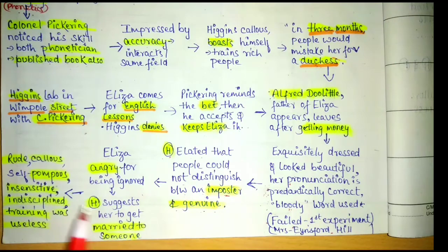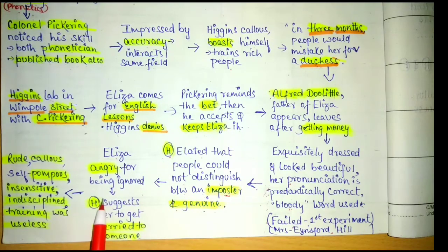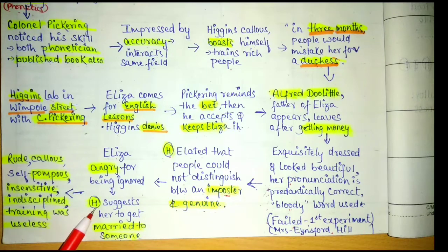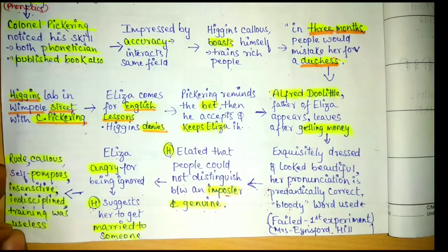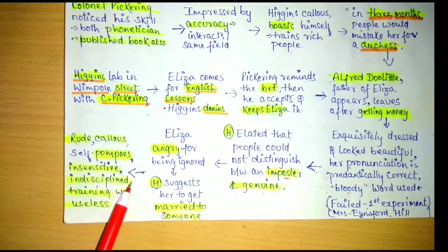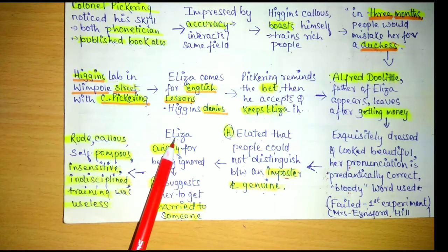What about Eliza now? She cannot go back to selling flowers, yet she cannot lead the life of a duchess. Seeing Higgins's elation while being ignored, she becomes very angry. Higgins insensitively suggests she should get married to someone, because he thinks the requirements for marriage are beauty, youth, elite manners, and polished etiquette — all of which he had instilled in her. This shows his callousness — he was self-pompous, very insensitive, and rude.